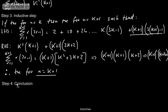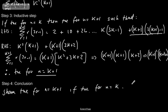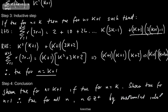Step 4, the conclusion. Shown true for n equals k plus 1 if true for n equals k. Shown true for n equals 1. Therefore, true for all n where n is a positive integer, and this is by mathematical induction.